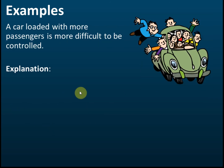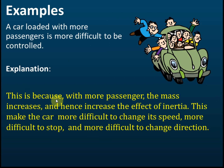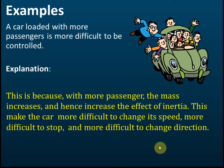A car loaded with more passengers is more difficult to control, for the same reasons. With more passengers, the mass increases, increasing the effect of inertia. This makes the car more difficult to change speed, more difficult to stop, and more difficult to change direction — all due to inertia.